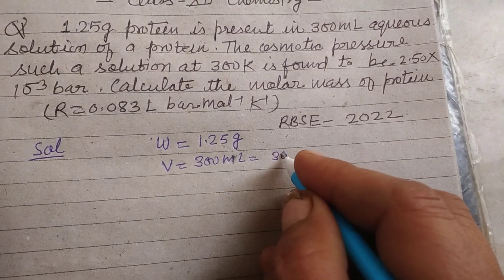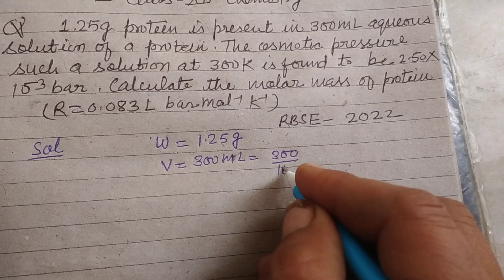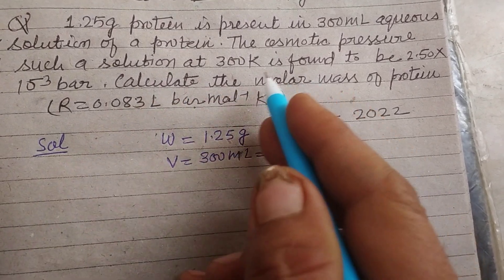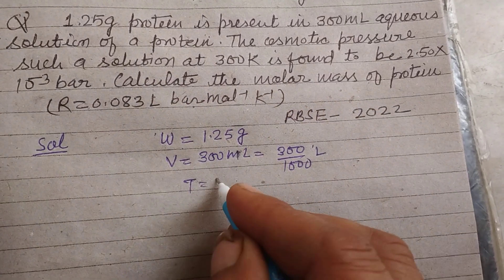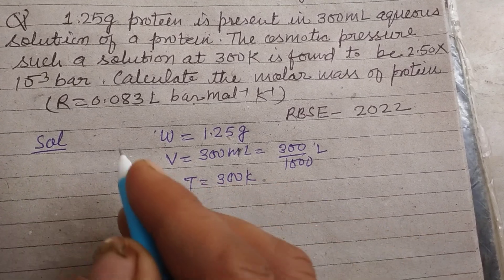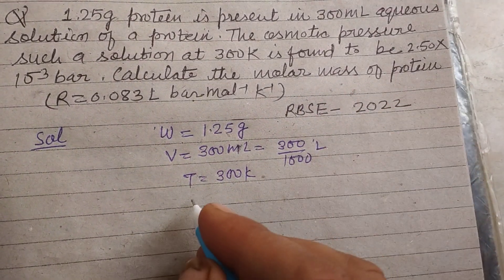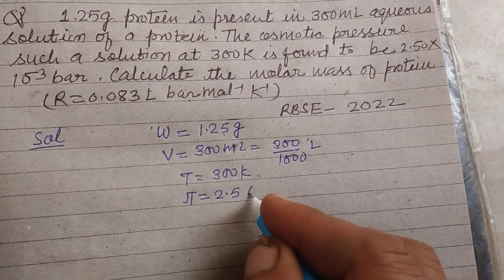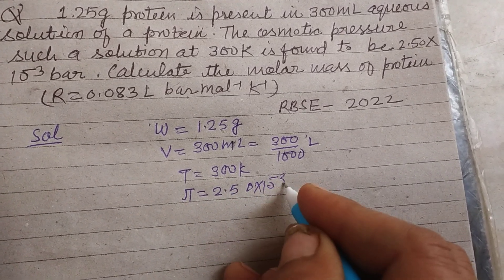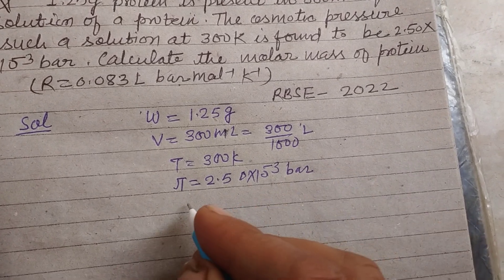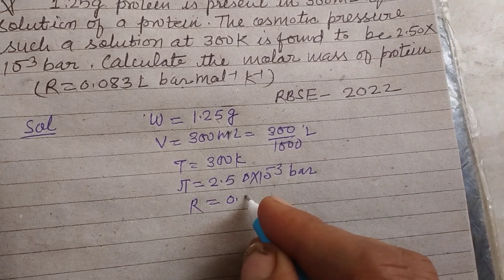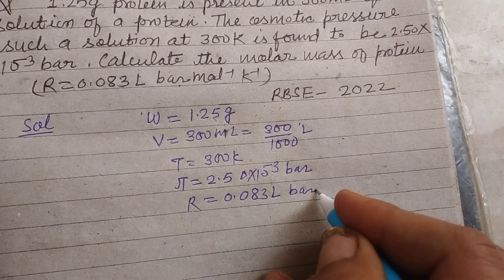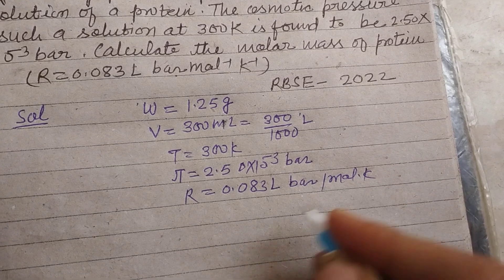Temperature is given to us which is 300 Kelvin to be found, and osmotic pressure which is represented by 2.50 into 10 to the power minus 3 bar is given. And R is given to us, 0.083 liter bar per mole into Kelvin.